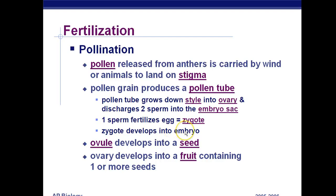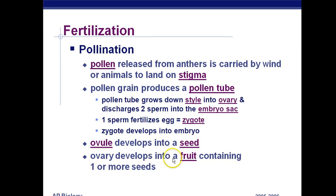The zygote develops into an embryo, and within seeded plants like gymnosperms and angiosperms, the ovule develops into a seed. The ovule is inside the ovary, the ovule has an egg, fertilized it becomes a zygote, and the ovule itself becomes a seed with the zygote inside. Now the ovary develops into a fruit — so in angiosperms, not gymnosperms, the ovary that covers the ovule turns into a fruit, which contains one or more seeds.